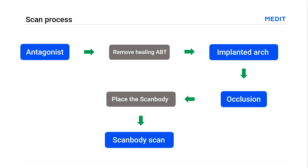Remove the healing abutment from the patient's mouth and scan the implanted arch, occlusion, and place the scan body in, then scan the scan body. This scanning sequence can minimize gum deformation.